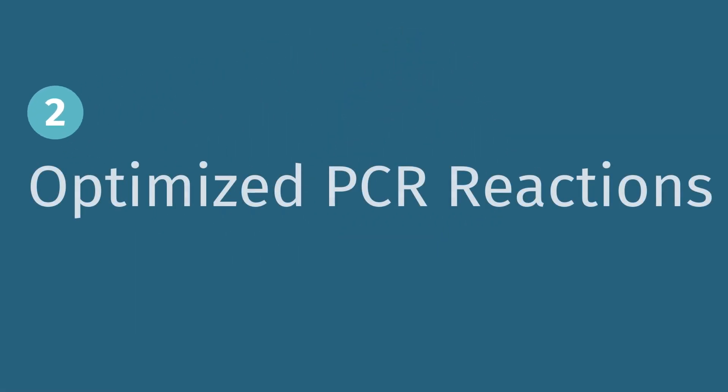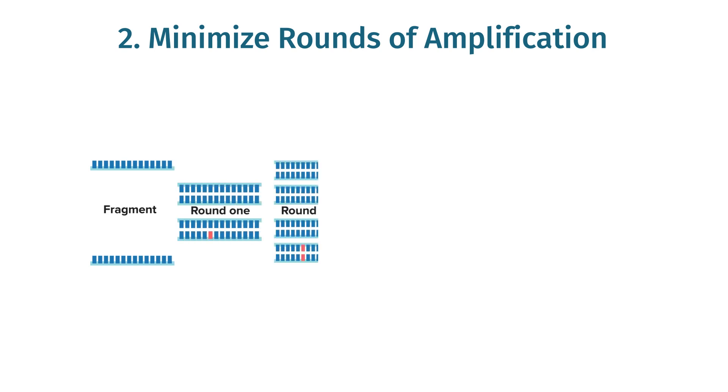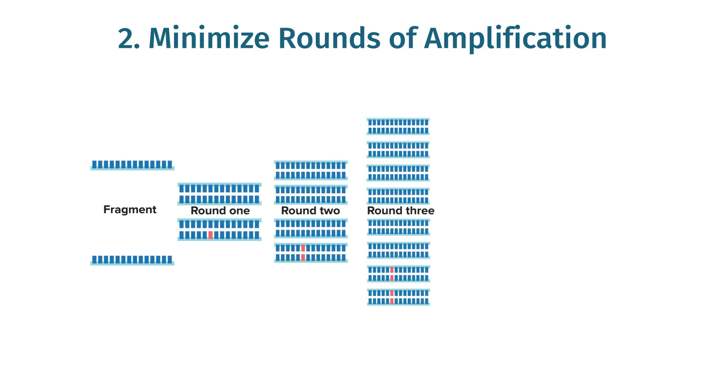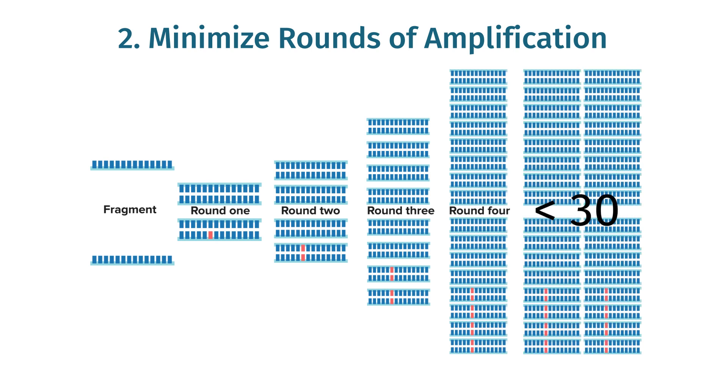Tip 2. Optimize your PCR reaction to minimize mutations and artifacts. Use a high-fidelity PCR polymerase for any PCR-based cloning technique, and keep rounds of PCR to a minimum, as each additional round of PCR will increase the number of mutations in your final product.